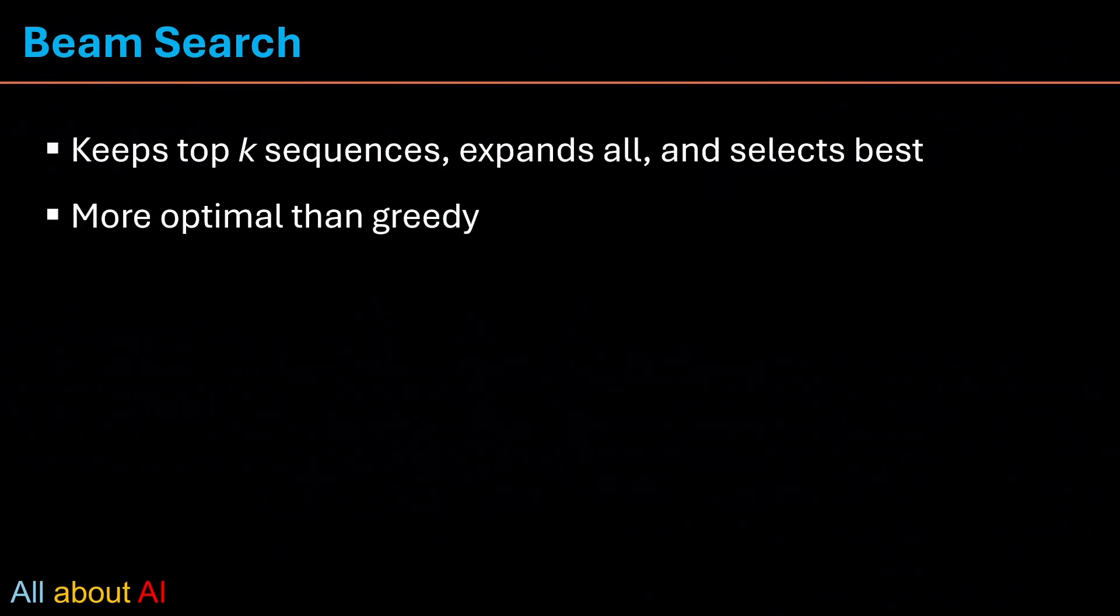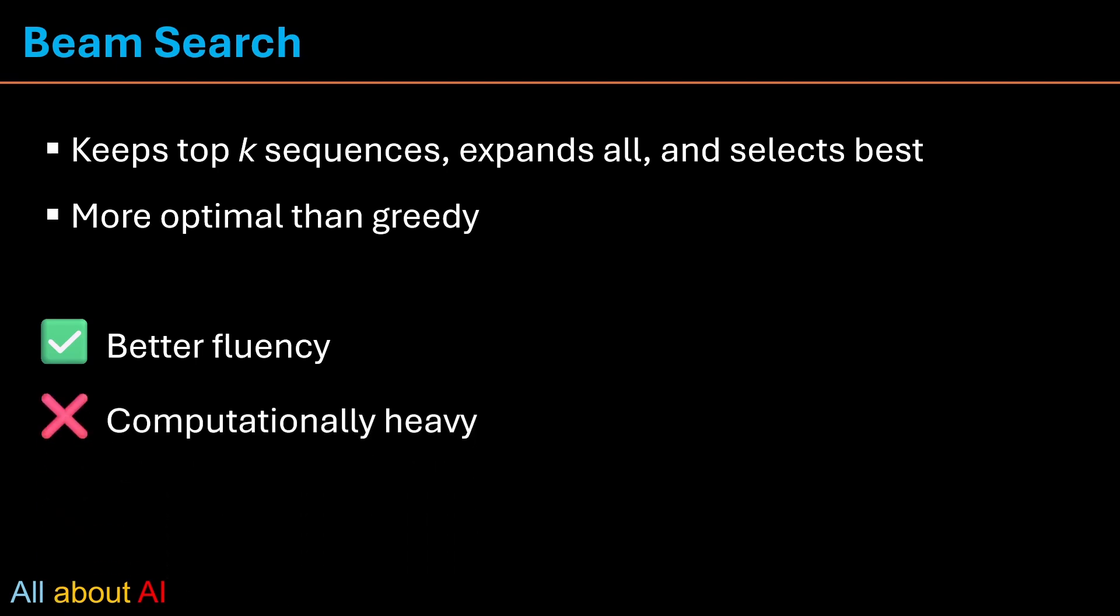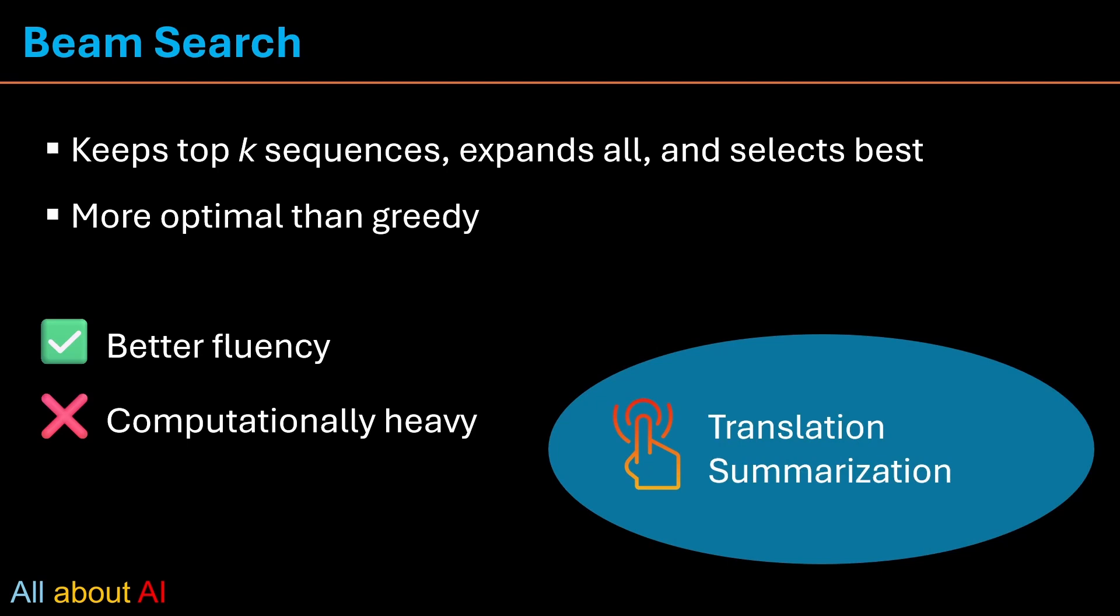Next we have beam search. Beam search is like group brainstorming. Instead of going with just one word, it keeps multiple options open, expanding possibilities and pruning weaker ones. It often results in smoother sentences, especially useful for translation, but it's not cheap. It takes more memory and can still sound safe or repetitive. This is good for translation and summarization.